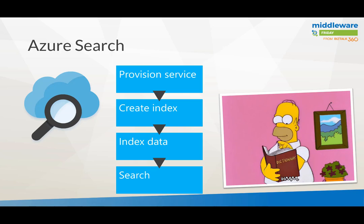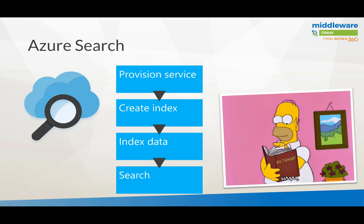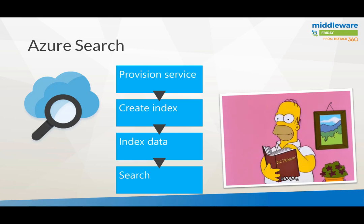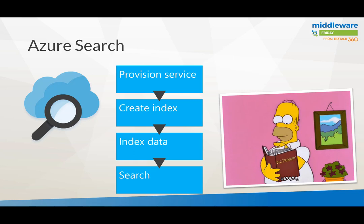Azure Search is a service in Azure — it's a platform as a service. So it has scaling, autoscaling, pay-as-you-go model, availability. Those kinds of characteristics you can find in any type of service capability in Azure.